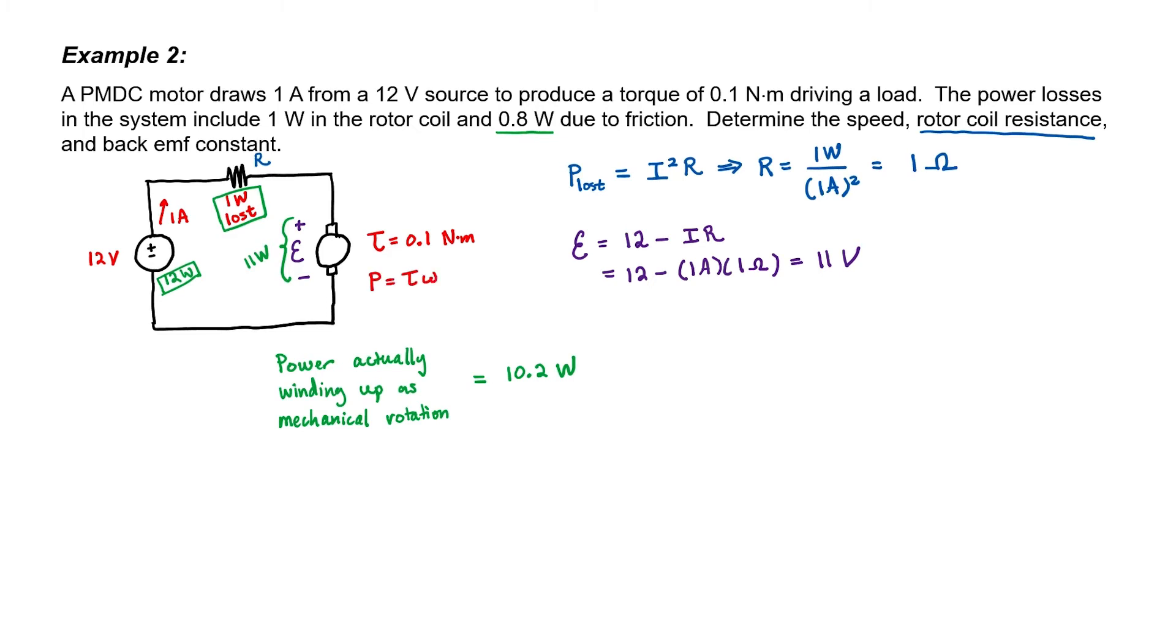I know that mechanical power is torque times speed. So I can calculate the speed by taking the mechanical power and dividing it by the torque. This comes out to 102 radians per second, which works out to 974 RPMs. The only thing left to find is the back EMF constant. We know our back EMF is 11 volts. We can determine that the back EMF constant is 107.8 millivolts per radian per second.